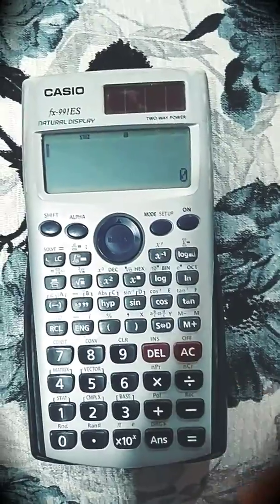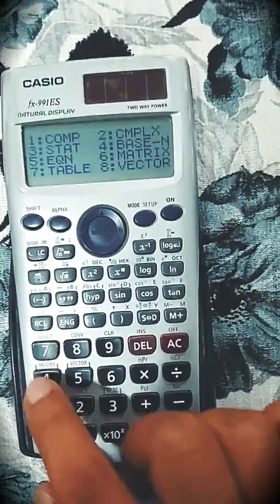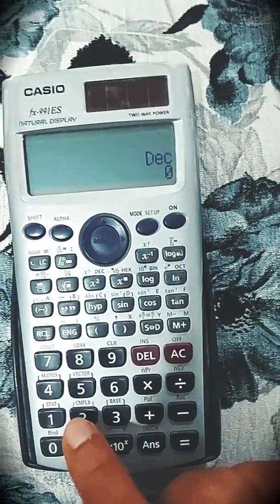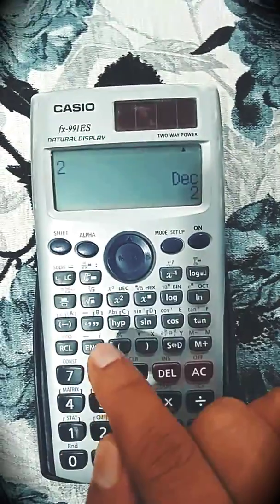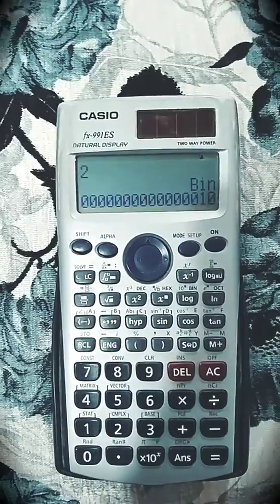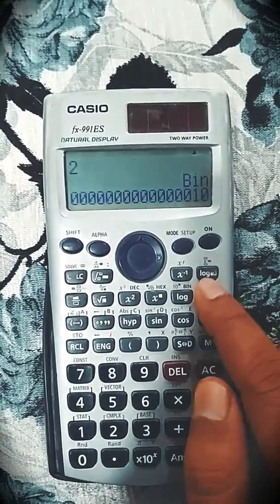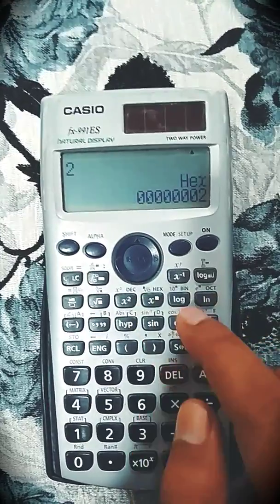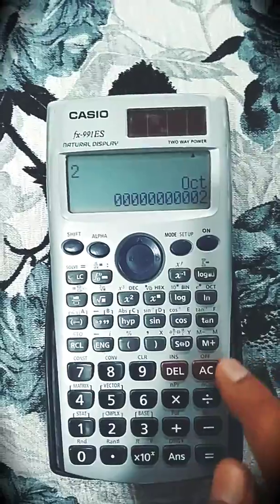Now next mode is base mode. If I want to convert 2 in the binary, so I will press equal, then I will press button binary. So this is the conversion of 2 in the binary mode. Different modes are available where by pressing this we will get the answer.